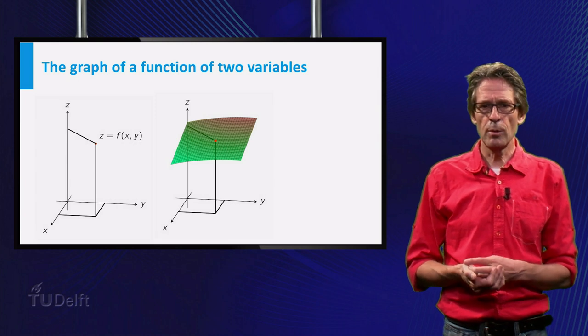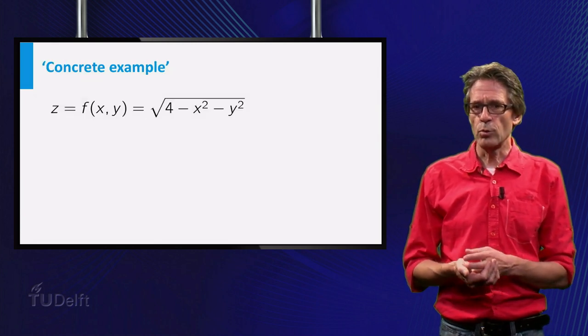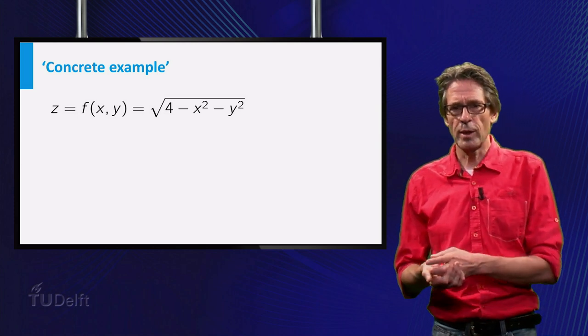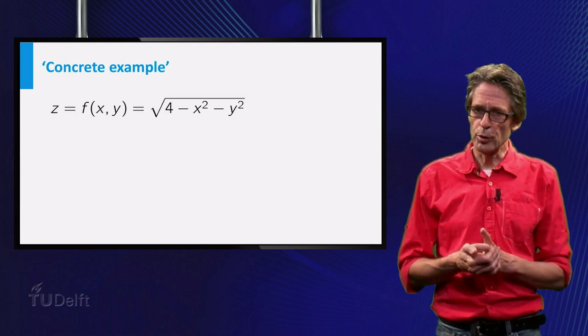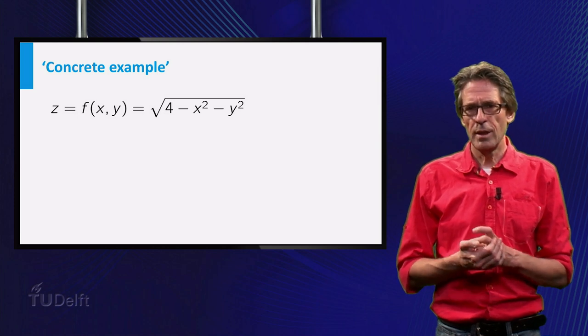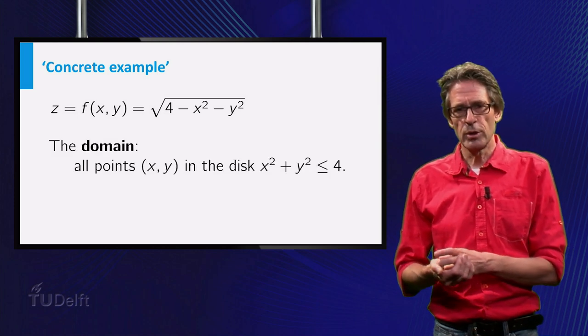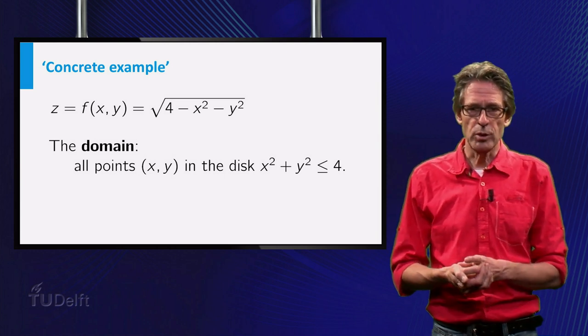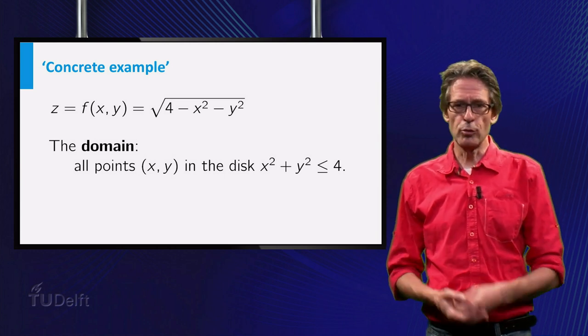I will give one simple and one slightly more complicated example. For the first example, let f be defined by f(x,y) equals the square root of 4 minus x squared minus y squared. First f is only defined if the expression under the square root is non-negative.